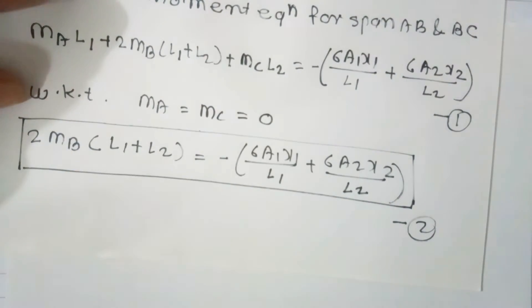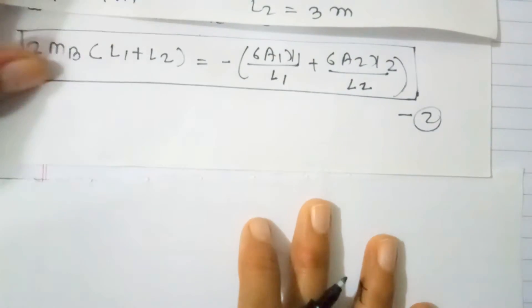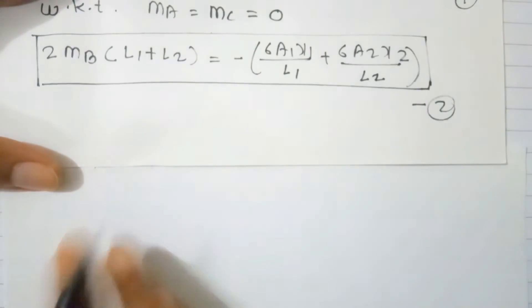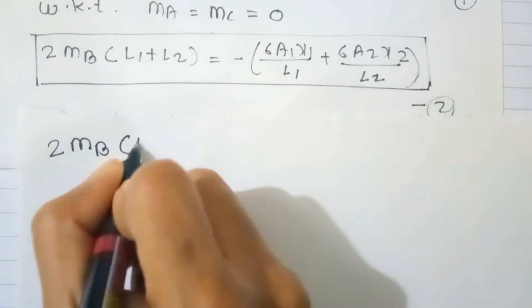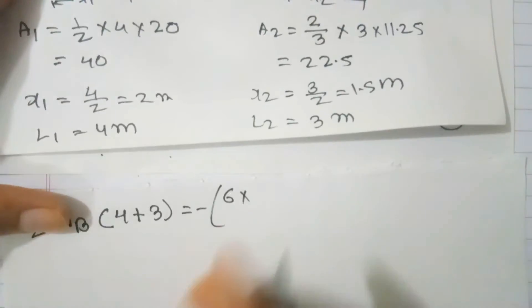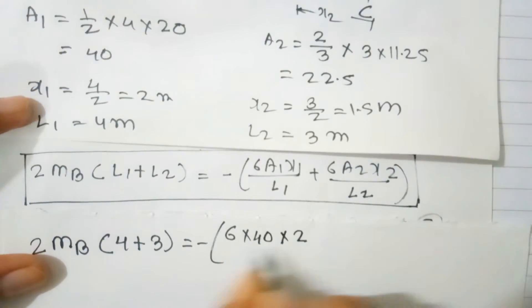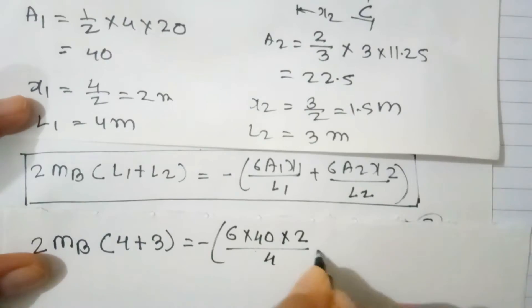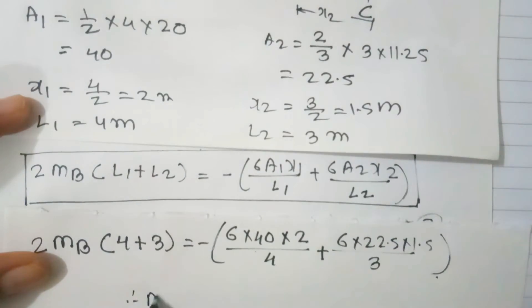Substitute all values into Equation 2: 2·MB·(L1 + L2) = −6·A1·x1/L1 + 6·A2·x2/L2, giving 2·MB·(4 + 3) = −6 × 40 × 2/4 + 6 × 22.5 × 1.5/3. Solving this equation, MB = −13.39 kN·m.